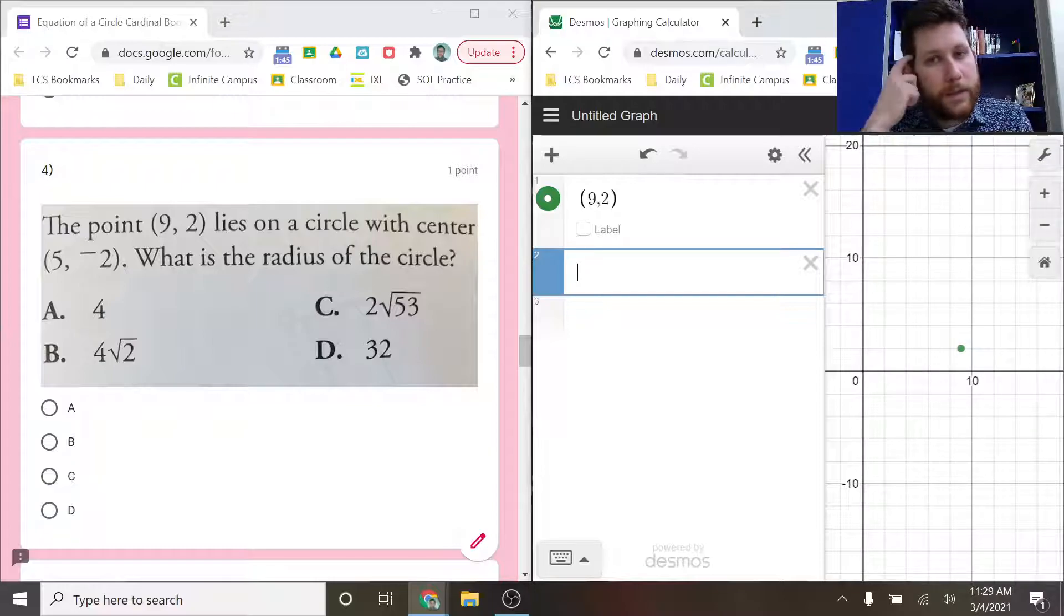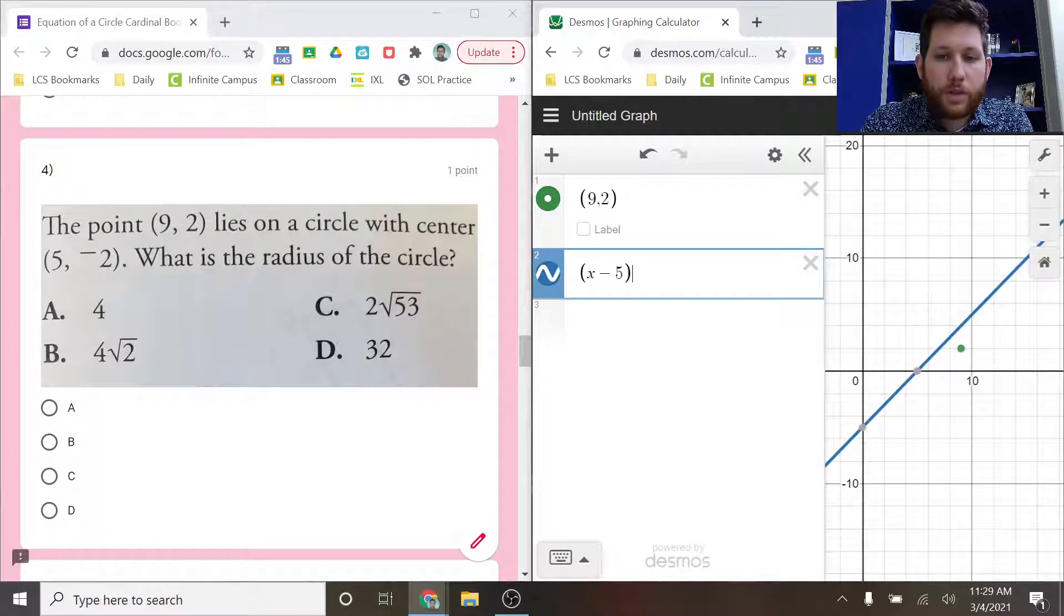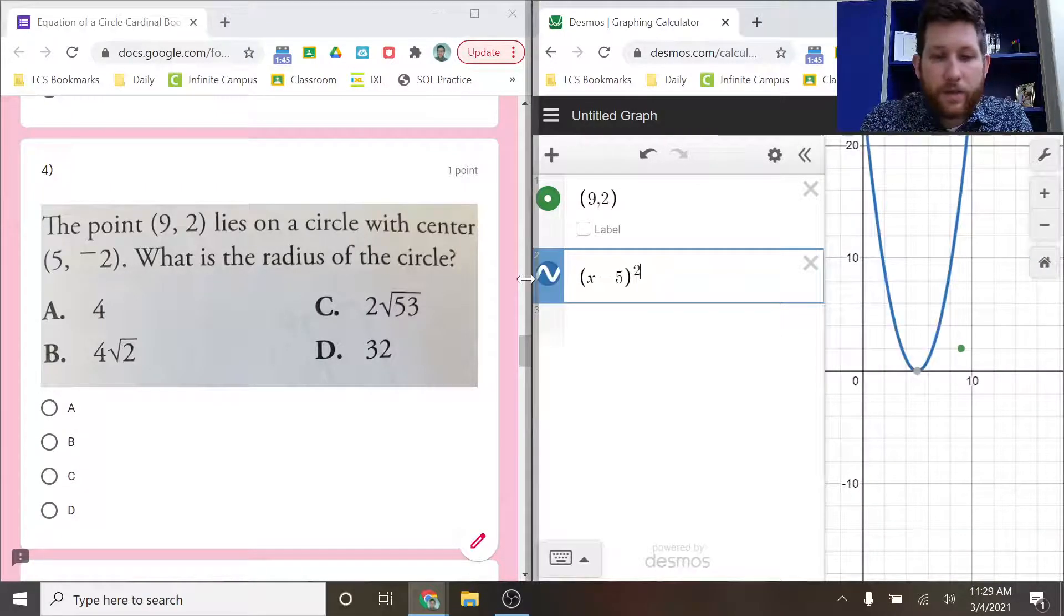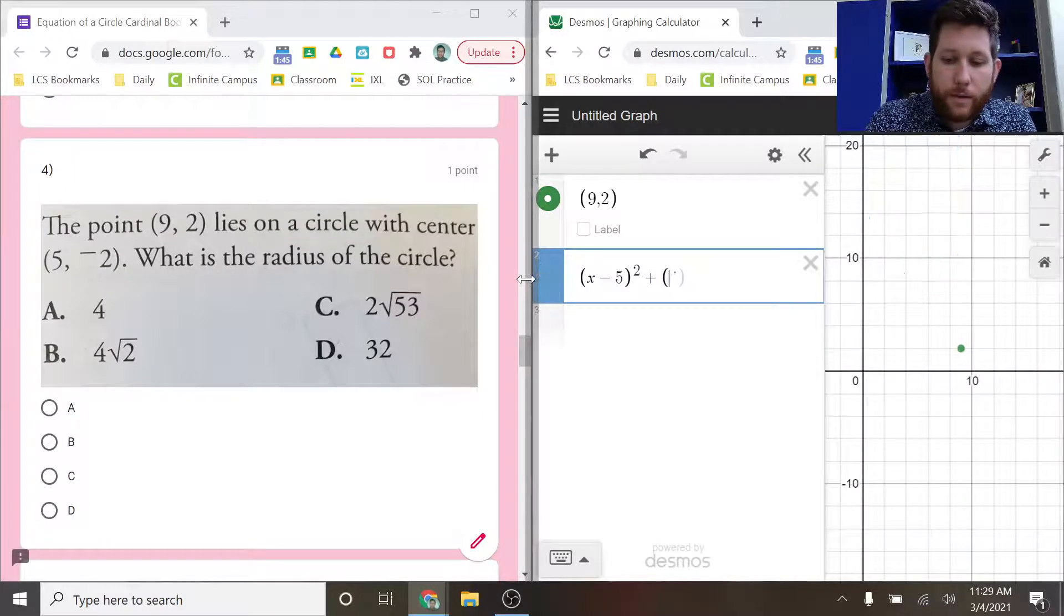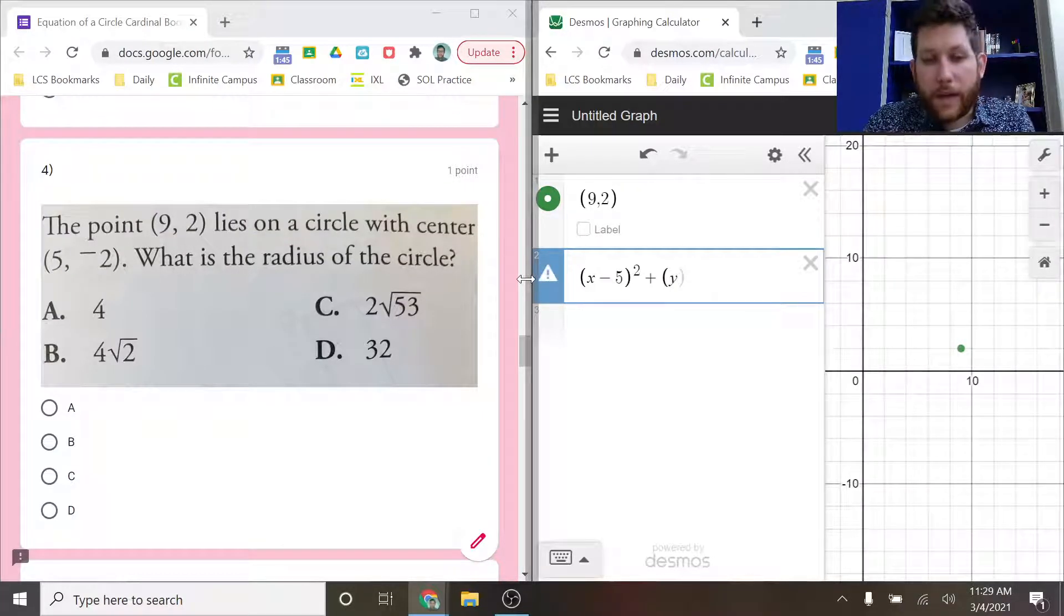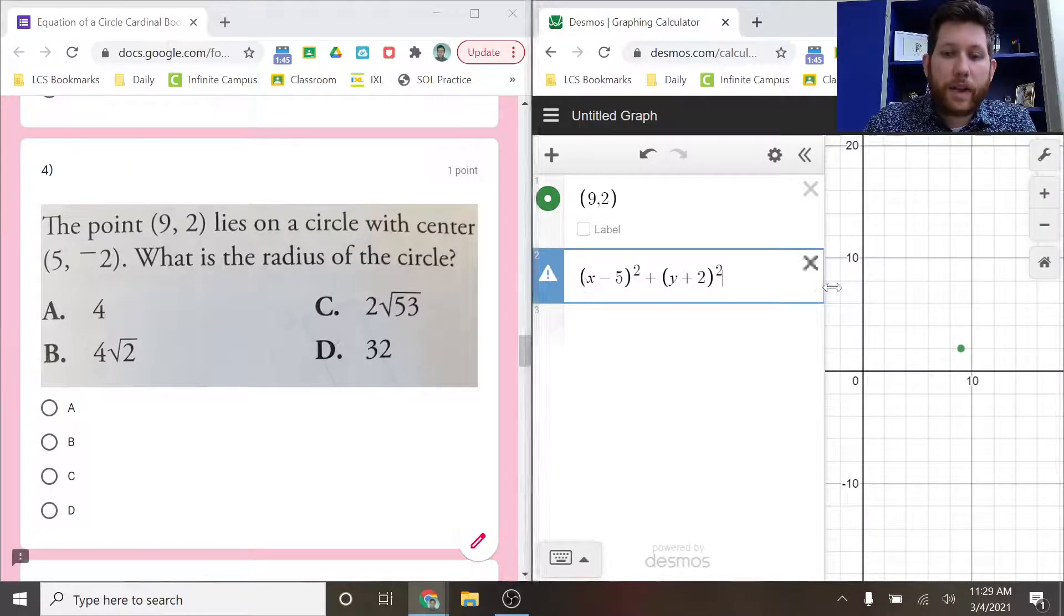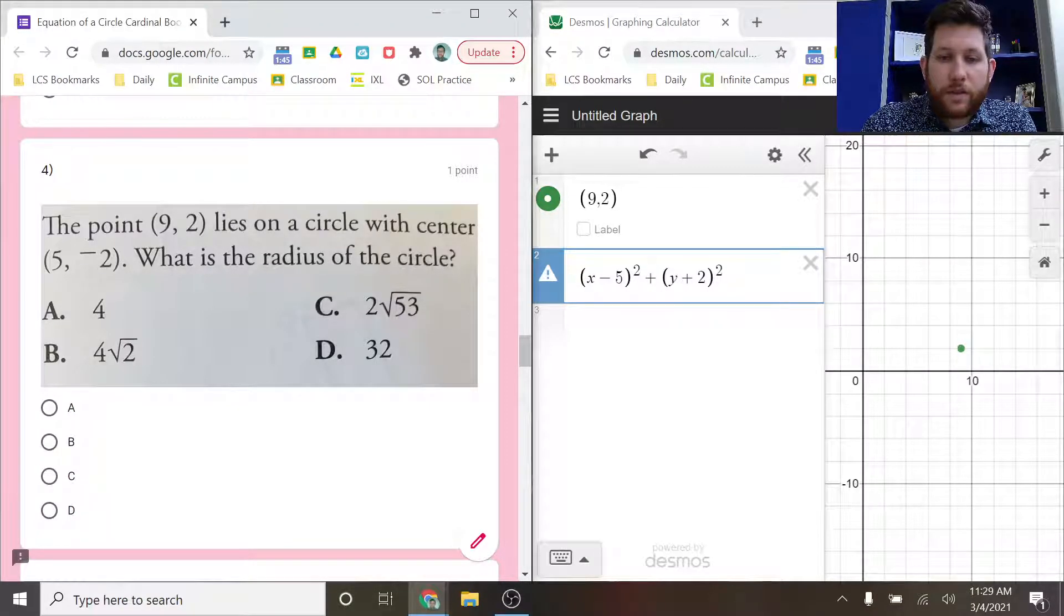So if I know things about the center, remember the center of the circle, what I'm going to do is put it in here. Remember, the minuses are always built into the equation. So (x - 5)² plus, instead of minus 2, we're going to do plus 2 squared. Notice that doesn't get me a solution yet, right?